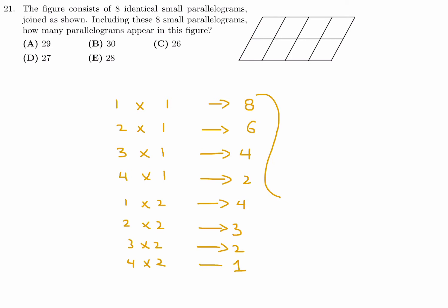So now we just add this up. And what do we have here? 8 at 20, 24, 27, 30. So number 21, the answer is B.